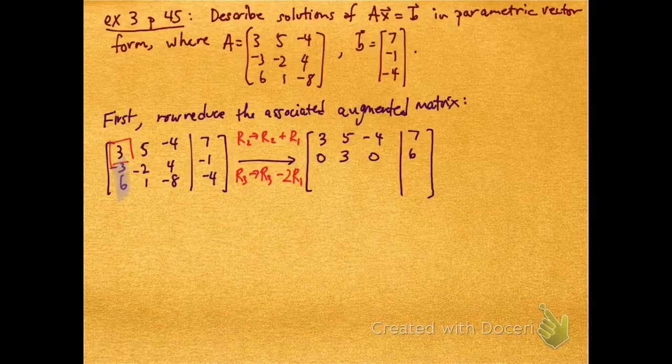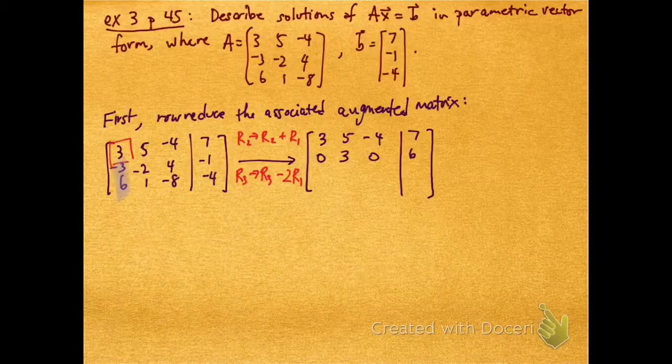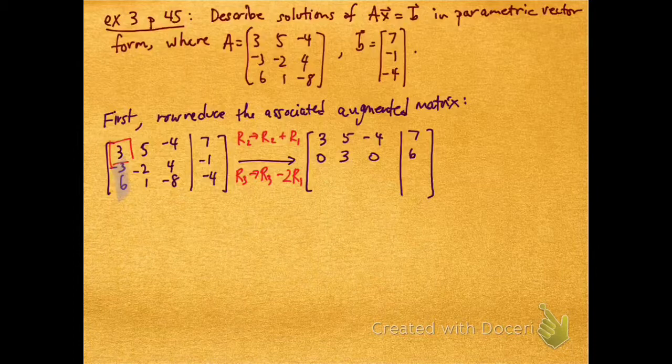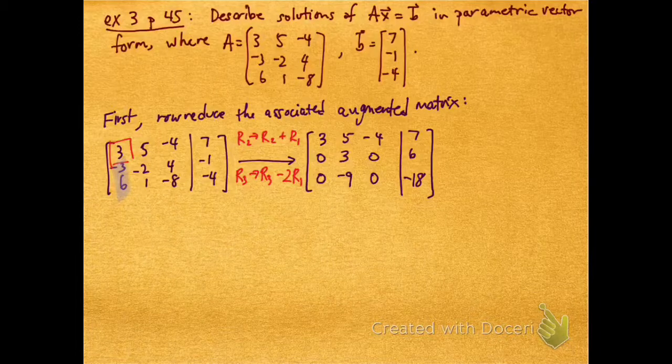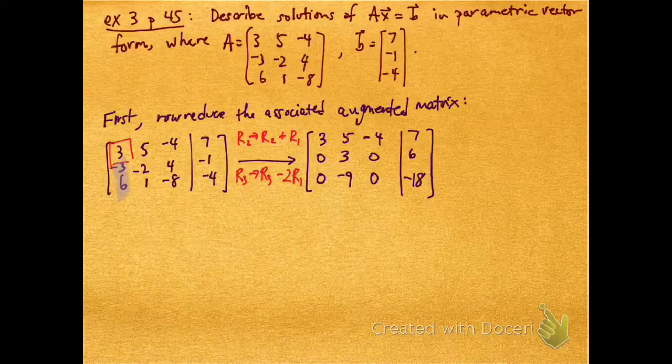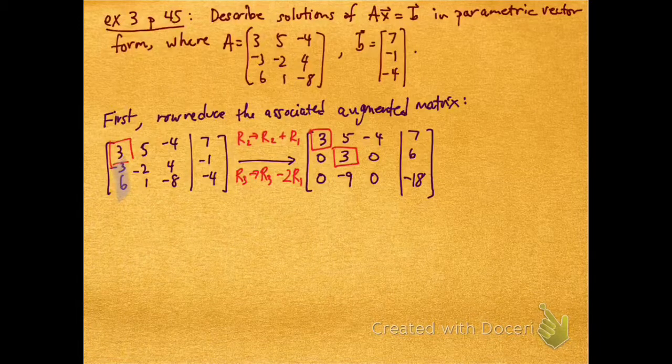And now to get rid of the 6 in the third row, I'm going to replace row 3 with row 3 minus 2 row 1. That gives me 0, -9, 0, -18.